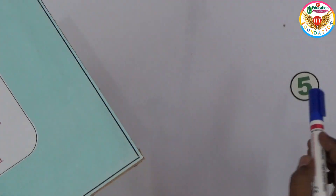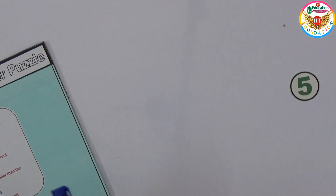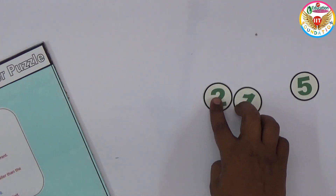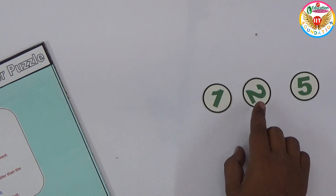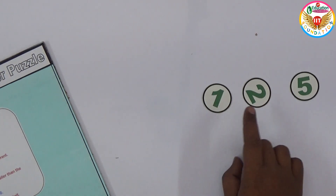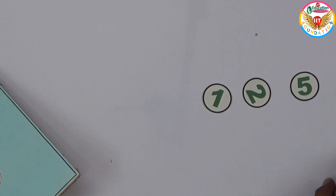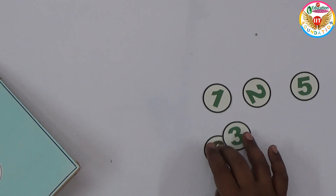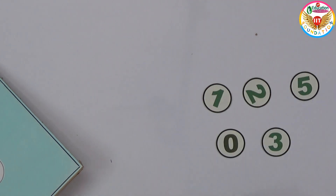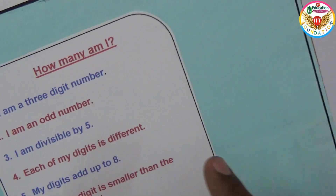The tens and hundreds places must sum to 3. The possible pairs are: 1 and 2, or 0 and 3. So the possible numbers are 125, 215, 035, or 305. All digits must be different, which all these cases satisfy.